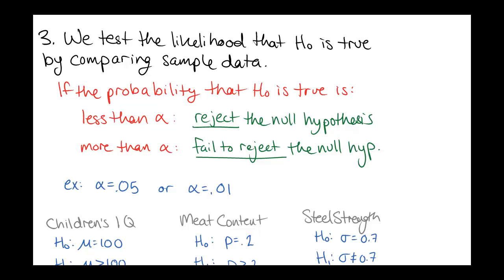Once we've identified the null and alternative hypotheses, we're going to test the likelihood that the null hypothesis is true. We collect sample data and then look at what's the probability that the null hypothesis is true. If that probability is very small — less than the error value called alpha — we say H0 doesn't sound like it's going to be true, so we reject the null hypothesis. But if our probability is not too small, greater than our error cutoff, we fail to reject the null hypothesis.